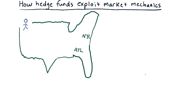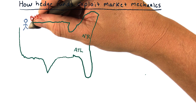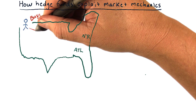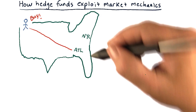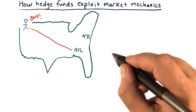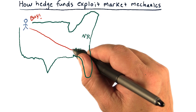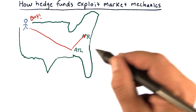Let's suppose you live in Seattle and you want to make an order. You look at the prices on your computer and see what you think looks like the prices are going to go up. So you enter a buy order. Your order travels all the way across the country, and because you use E-Trade, it stops in Atlanta and then hops to New York City.